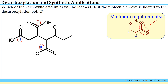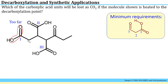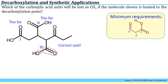Keeping in mind the minimum requirements — a carboxylic acid, one intervening carbon, then another carbonyl unit — we evaluate each candidate. Carboxylic acid one has two carbons before the next carbonyl, which is too far away. Carboxylic acid two is also too far away, with two carbons before the next carbonyl. Finally, the correct unit has the carboxylic acid, one carbon in between, and then another carbonyl — that corresponds to the minimum required unit for decarboxylation.